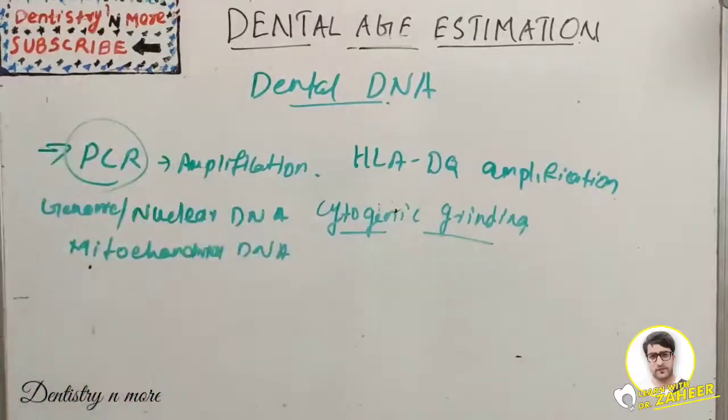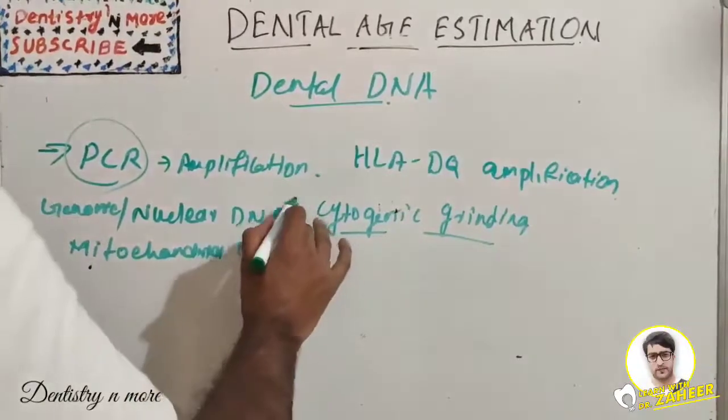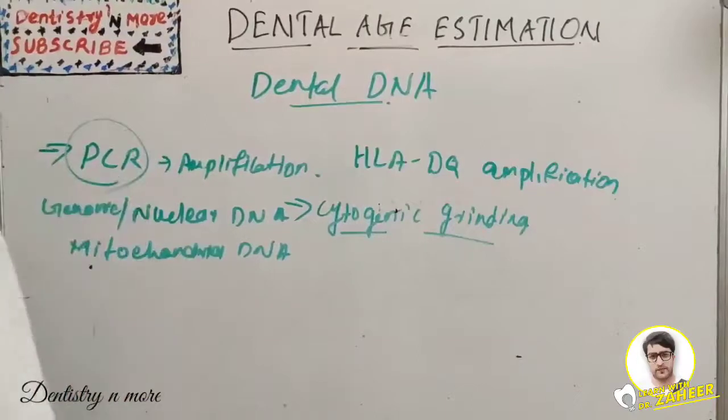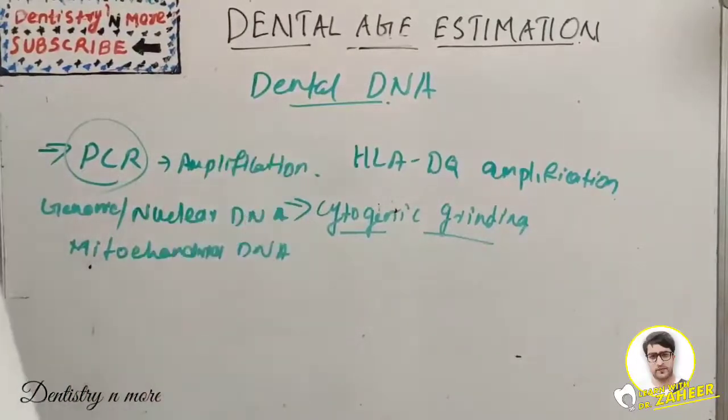We can use intact carious as well as root-filled tooth. First we cool the tooth to extremely low temperature, then we grind it to a fine powder. But the main problem of cryogenic grinding is the tooth needs to be completely crushed.